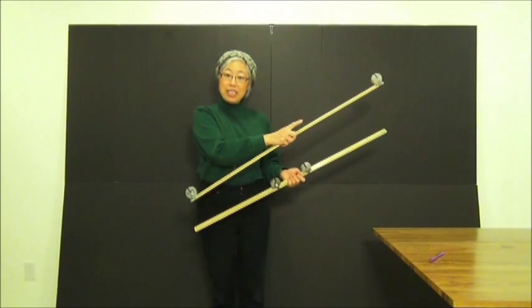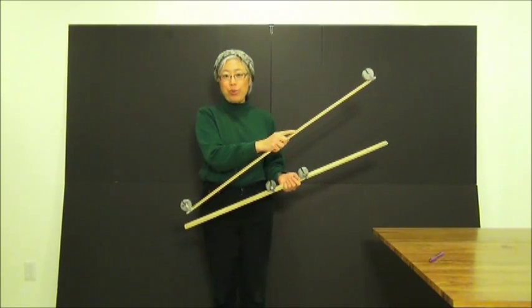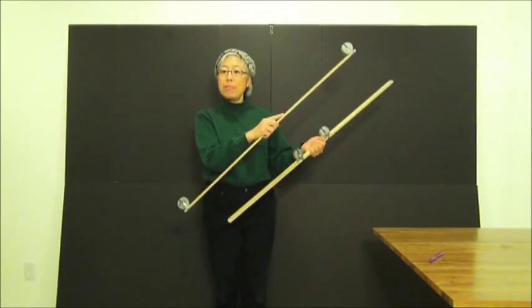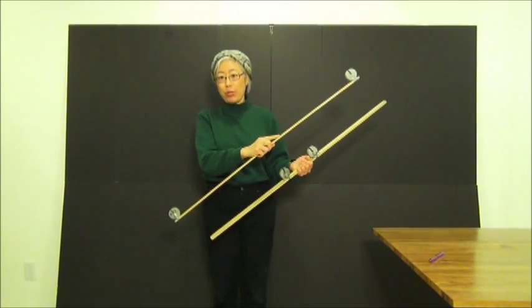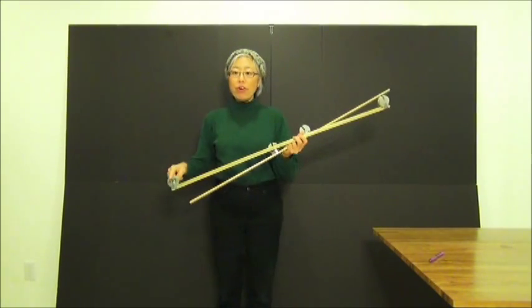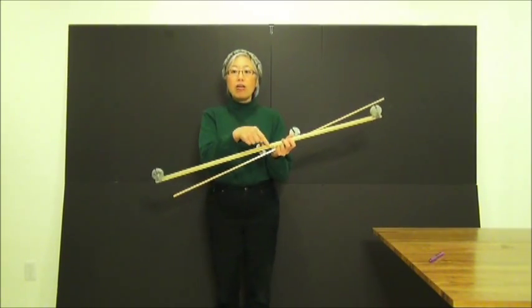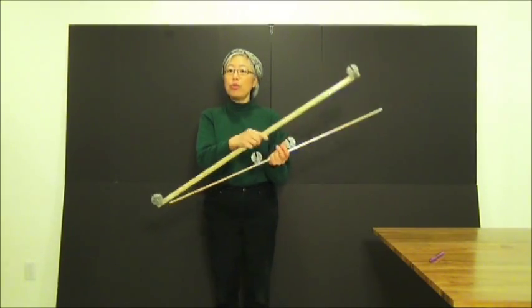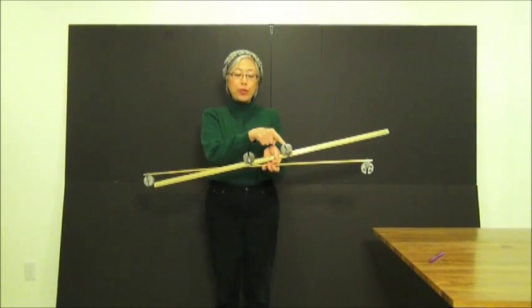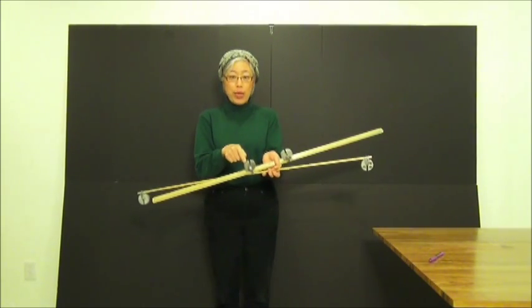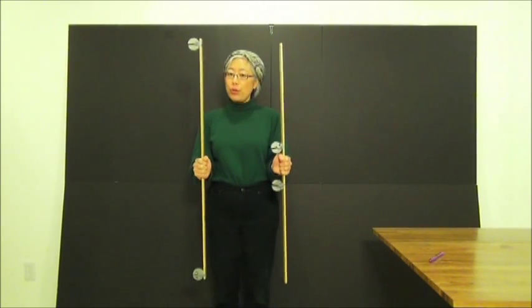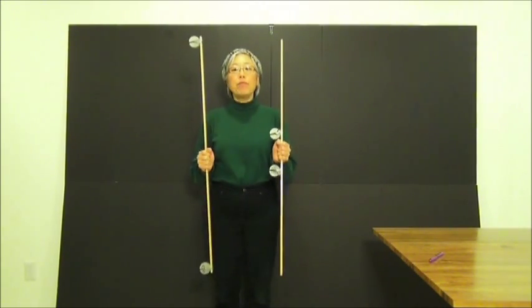Because the meter sticks have mass too. So they also contribute to the weights-meter-stick combinations rotational inertia. The 200-gram weights being farther away from the axis causes the rotational inertia to be 36 times that of the part contributed by the 200-gram weights alone. But the meter-stick part of the rotational inertia is the same for both.